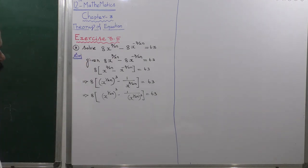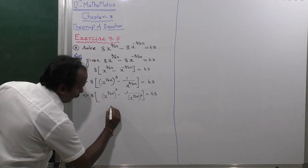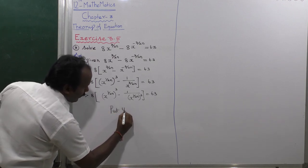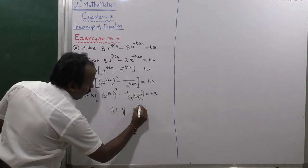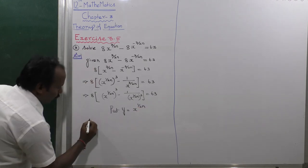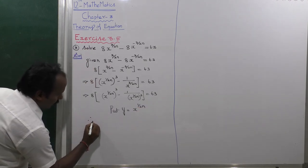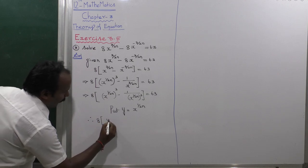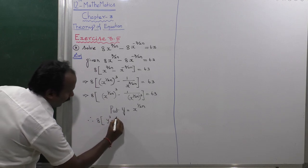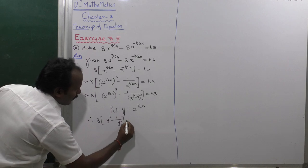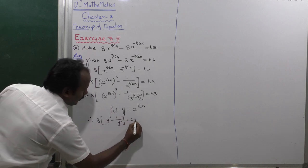Now replace with the substitution y, that is y equals x power 1 by 2n. Therefore, 8 into y power 3 minus 1 by y power 3 is equal to 63.